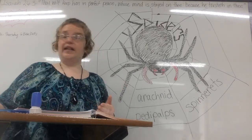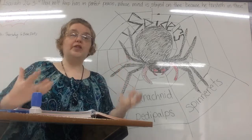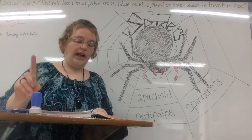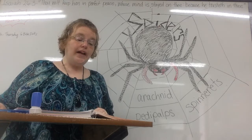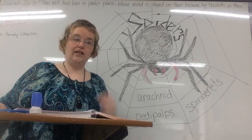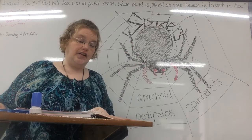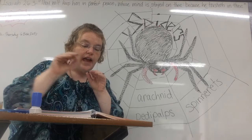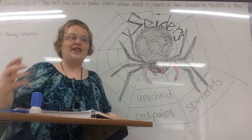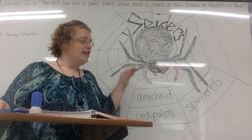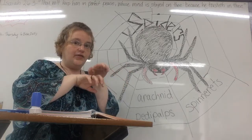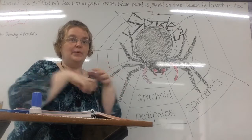Not all spiders use a web to catch their food — there are other methods. Spinning webs is one way, but spiders have other ways too. The trapdoor spider digs a hole into the ground and builds a hidden door made of silk and soil. The spider stays just under the partly open door, and when an insect gets close the spider jumps out and grabs it. That's the trapdoor spider — it waits for an insect to crawl by for its next meal.